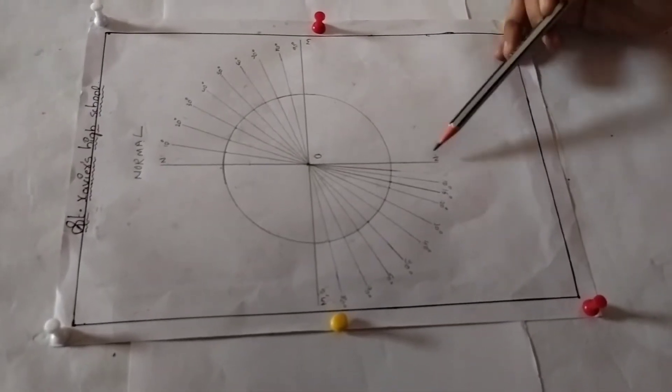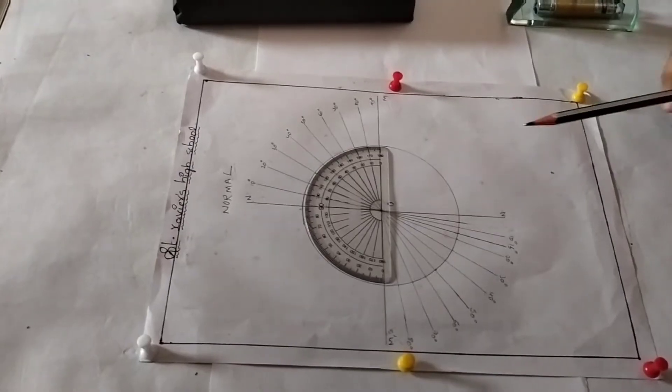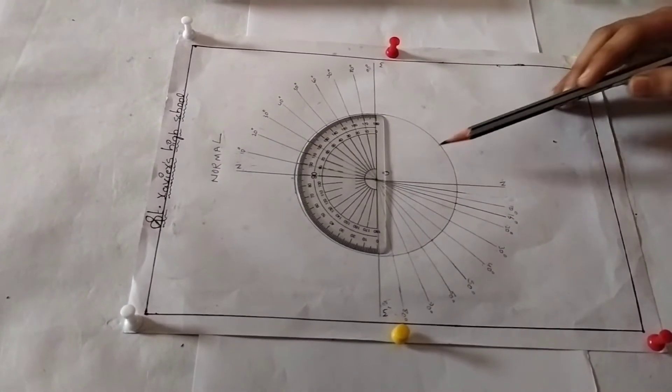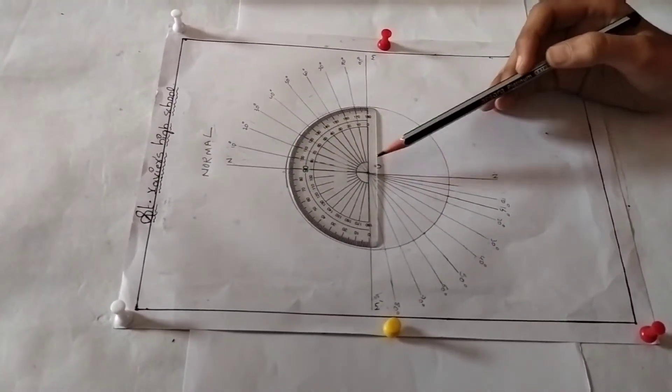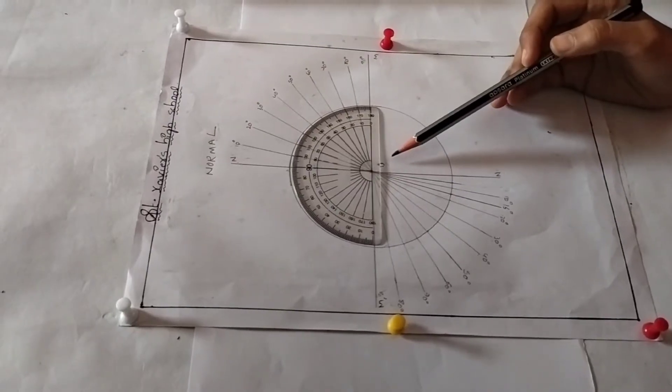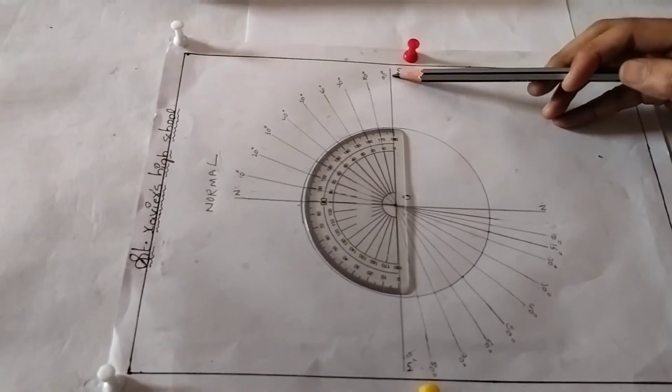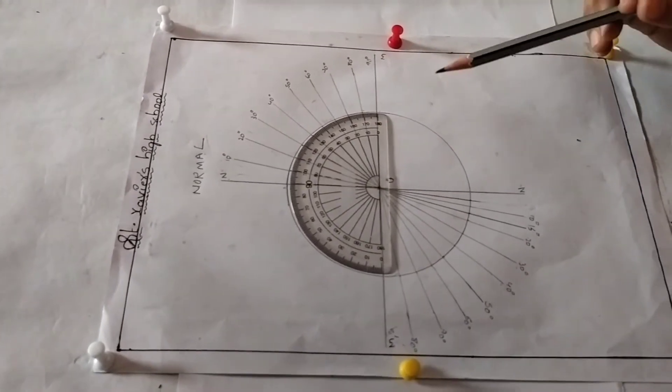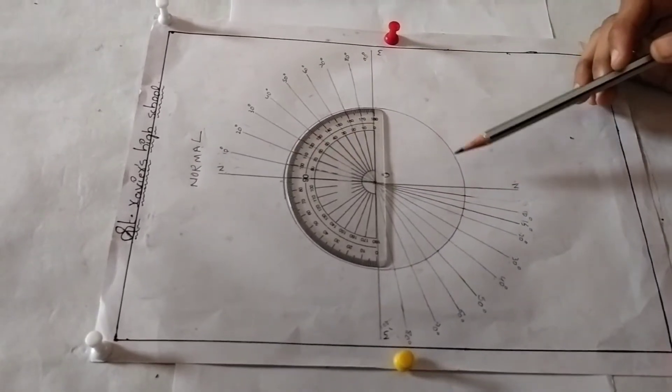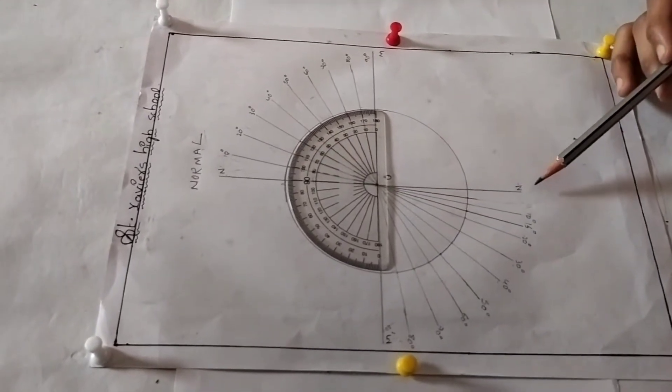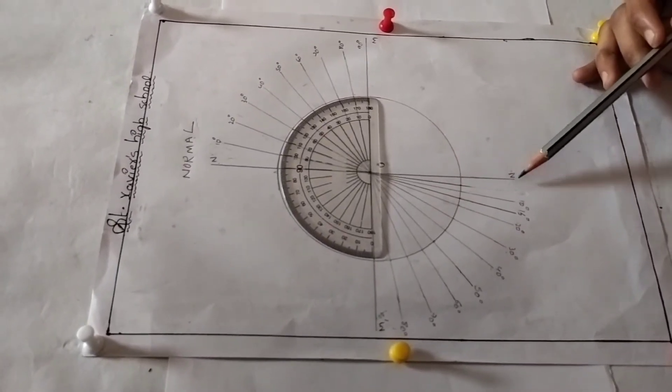Take a protractor and place it along NN in such a way that its center coincides with O as shown in the figure. Then mark the angles from 0 degrees to 90 degrees on both sides of the line NN. Repeat the same on the other side of the line NN. The angles should be indicated on the curved line.